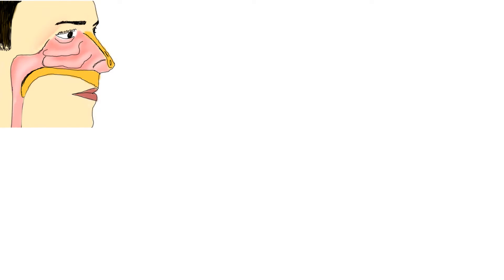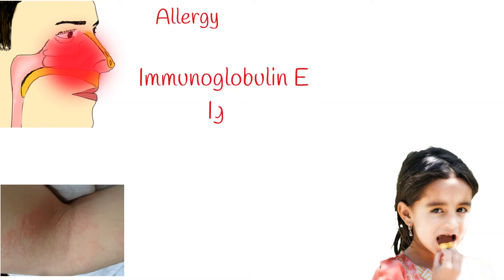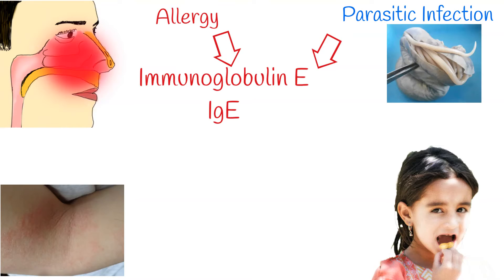Allergic diseases are amongst the most prevalent diseases worldwide. Food, skin, and respiratory allergies are the most common atopic disorders in children. For the past few decades, the prevalence of allergy has increased significantly in Western countries.